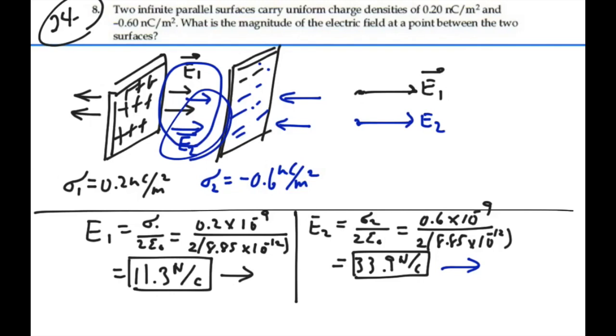So these two fields are in the same direction. They're adding together, so our net field is going to equal E1 plus E2. That will be 11.3 plus 33.9, which will be 45.2 newtons per coulomb. And as I've drawn it, this field will be to the right, 45.2 newtons per coulomb between these two sheets.